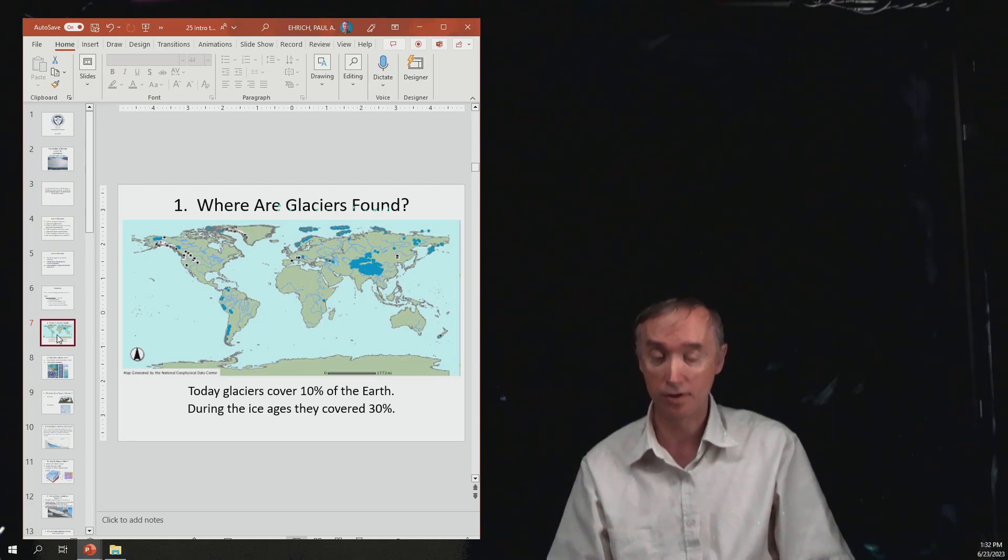This picture here shows those mountainous glaciers. You can see there's a large number of glaciers located in the Himalayas, and there's also a lot of glaciers in South America in the Andes, in North America in the Rockies, and in Europe in the Alps. Today glaciers cover 10% of the earth, but during the ice ages they covered 30% of the earth's surface.